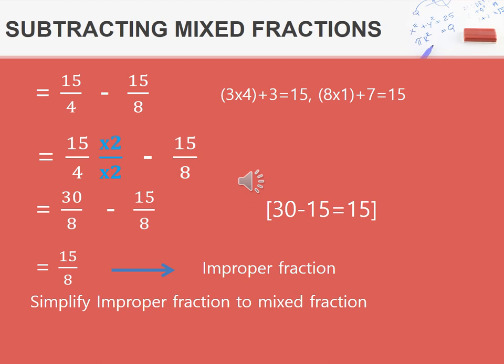When subtracting improper fractions, 15 over 4 subtract 15 over 8, you will notice that the denominators are not the same. We can make both common by multiplying the 4 by 2 and 15 by 2. In the third step, we get an answer of 30 over 8 subtract 15 over 8. We now can subtract.